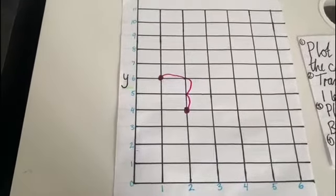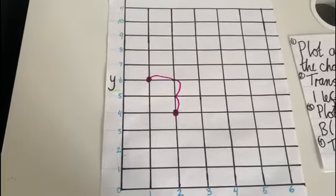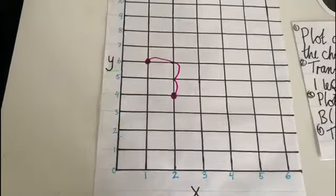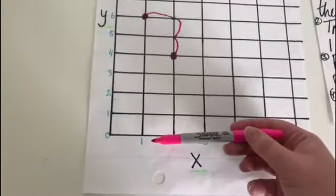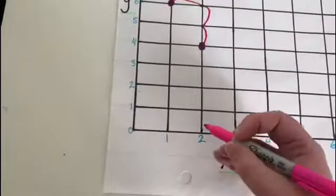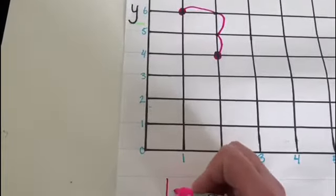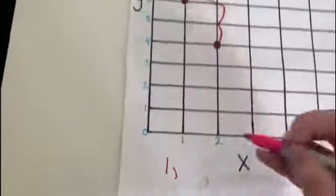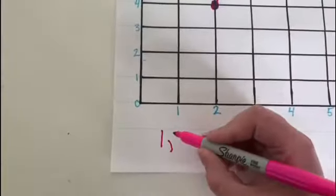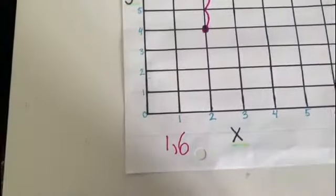And because I've translated the point it has a new set of coordinates. So my new coordinates would be 1, because we look at the x-axis first, and then on the y-axis it is 6. So my new coordinates would be 1 comma 6.